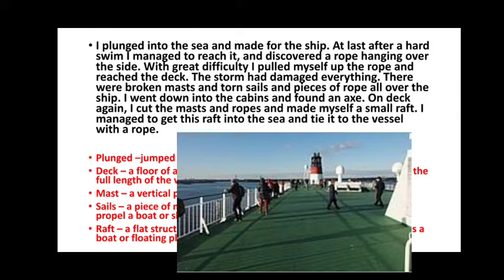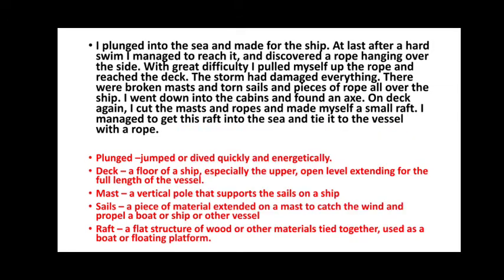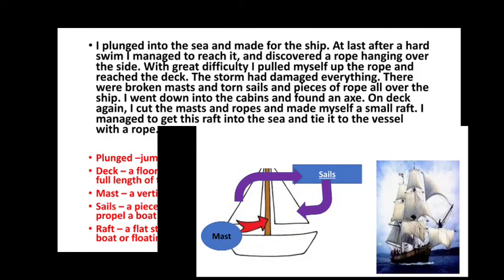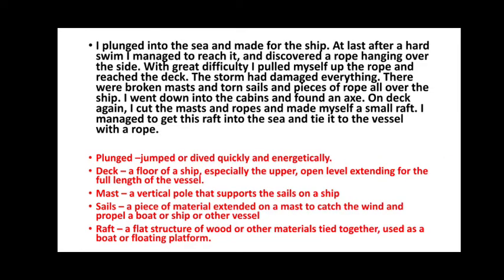Normally, when we talk about the deck of the ship, we are talking about the top floor of the ship. When Robinson Crusoe reached the deck, he saw that the storm had completely destroyed the ship. He could see broken masts and torn sails and pieces of rope all over the ship. Mast refers to the wooden pole on which the sails are hung, and sails refer to the big pieces of cloth hung on the masts to catch the wind. So the wooden poles were broken, the cloth sails were torn, and ropes were lying in pieces everywhere — there was complete destruction.